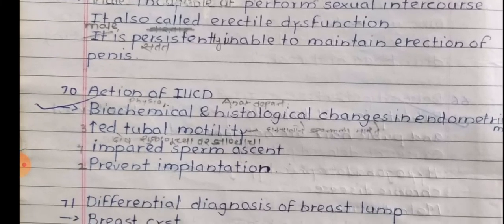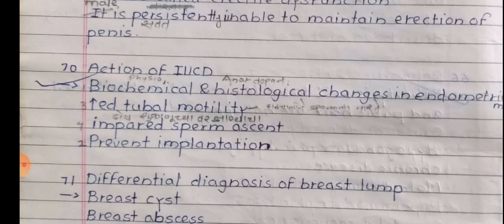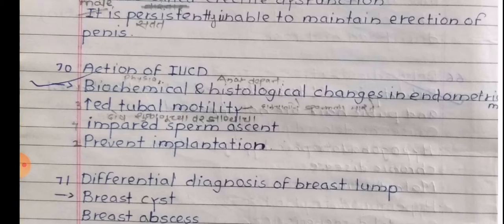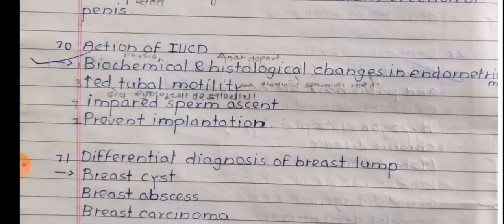Action of IUCD. Biochemical actions and histological changes in the endometrium take place. There is increased tubal motility, impaired sperm ascent, and prevention of implantation.